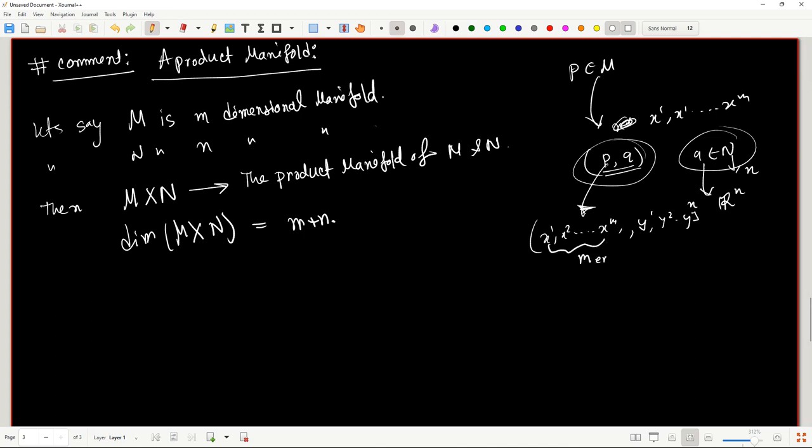There are m entries and now there are n entries. So in total on the product manifold, some point capital Q, this point Q can be mapped to an m plus n dimensional Euclidean space by some other homeomorphism.